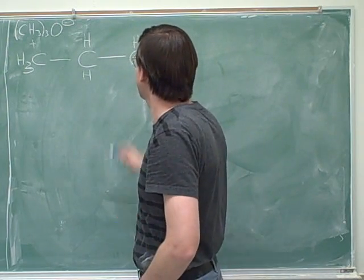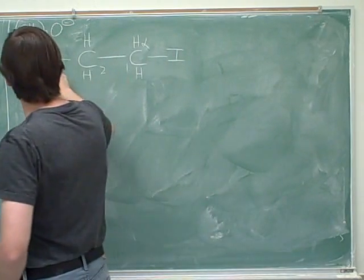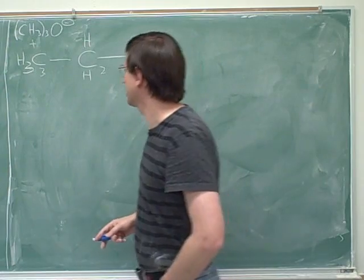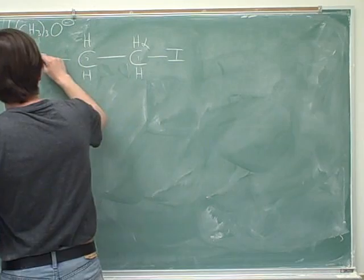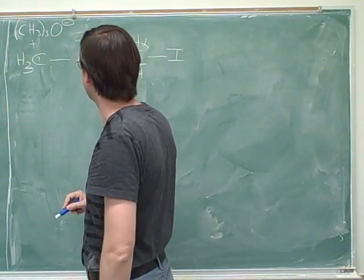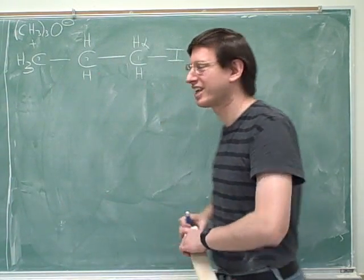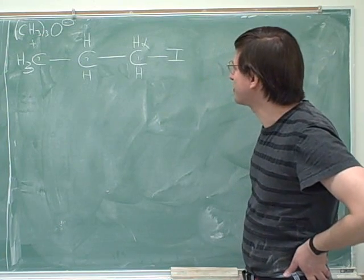All right, it's probably a good idea to number the carbons as well. One, two, three. This is not nomenclature numbering. This is just reference numbering. Maybe one, two, and three. I don't want to get confused, but those are our numbers. Okay. So those are our numbers.